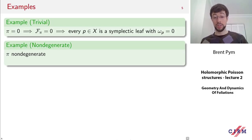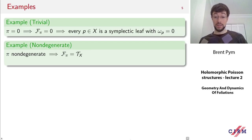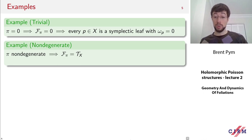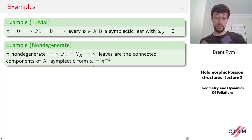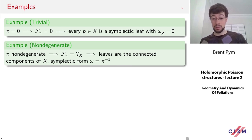At the opposite extreme, consider the case of a non-degenerate Poisson manifold where the bivector is non-degenerate. Then the span of the Hamiltonian vector fields is the entire tangent space, so the foliation is just the whole tangent bundle. As a consequence, the leaves are simply the connected components of the manifold X, equipped with a symplectic form which is just the inverse of this non-degenerate bivector. So these are the two extremes: zero Poisson structure, or something non-degenerate.